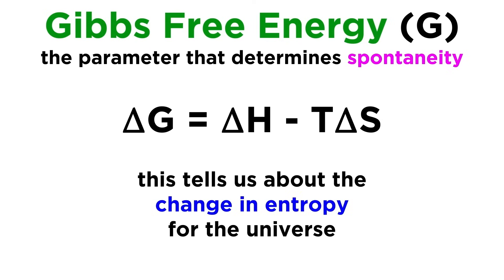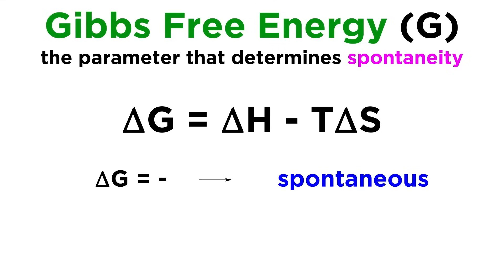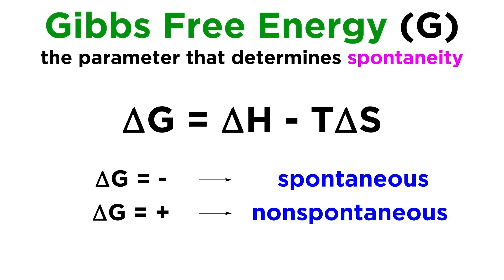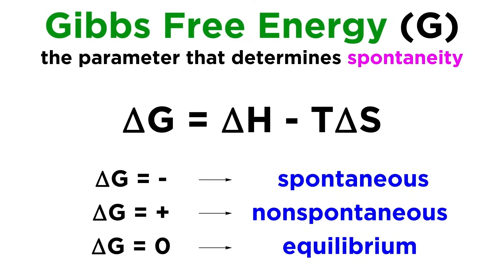This equation is invaluable in chemistry. Unlike the vague guidelines for predicting spontaneity examined earlier, ΔG tells us information about the entropy change for the universe rather than just for the system, which is a more definitive way of determining spontaneity. If the ΔG for a reaction is negative, the reaction will be spontaneous. If ΔG is positive, the reaction will be non-spontaneous, and if ΔG equals zero, the system is at equilibrium and any accompanying process will be reversible.